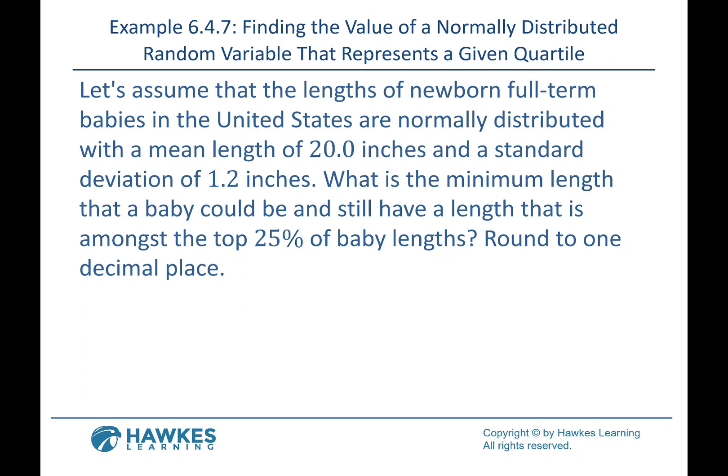This one says: assume that the lengths of newborn full-term babies in the United States are normally distributed with a mean of 20 inches and a standard deviation of 1.2 inches. What's the minimum length that a baby could be and still have a length among the top 25 percent? Our answer is going to be a length — that's an x. The data is normally distributed, so we find the z that matches up with this length, then use our formula with the mean and standard deviation to get our final answer.